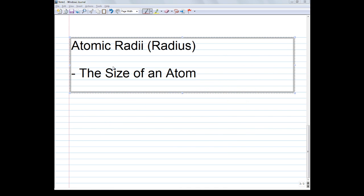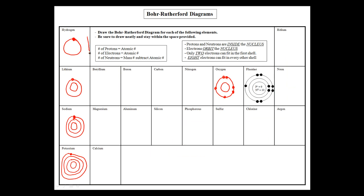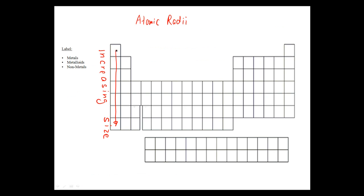The next trend we'll be discussing is atomic radii. Radii is the plural for radius, and essentially this is the size of an atom. Atomic radius increases as you go down a group on the periodic table, because as you go down the group, you increase the number of shells. In the first period there's only one shell; second period, two shells; third period, three shells; and so on. Each time you go down a group, you are increasing the number of shells. Thus atomic radius increases as you go from top to bottom.